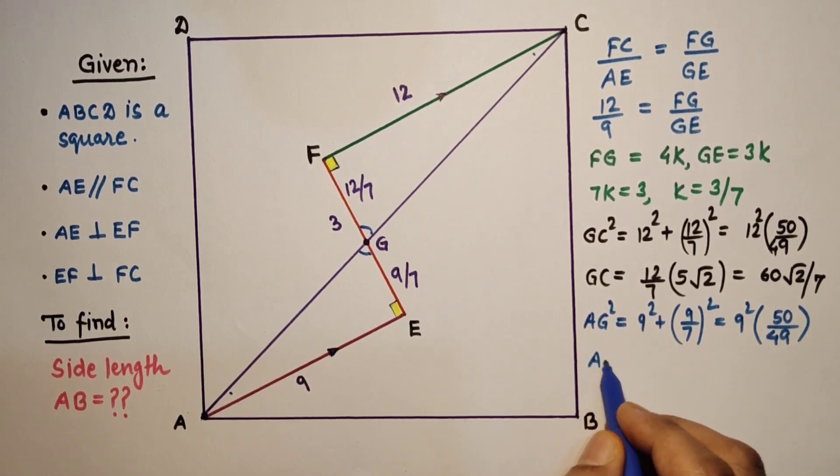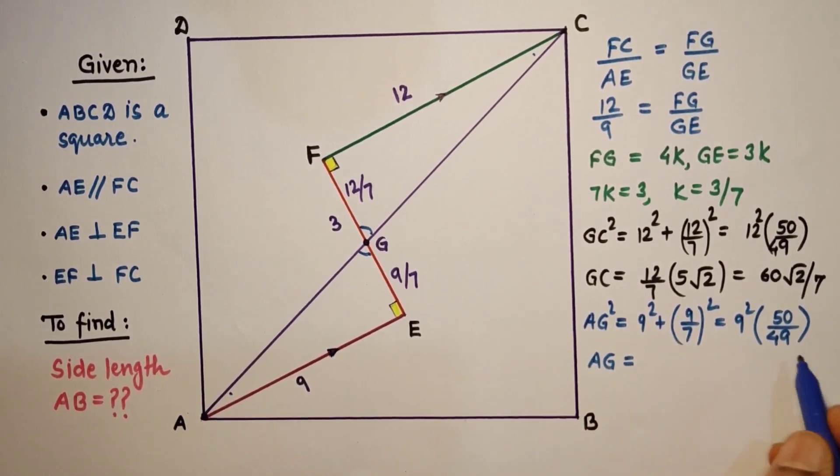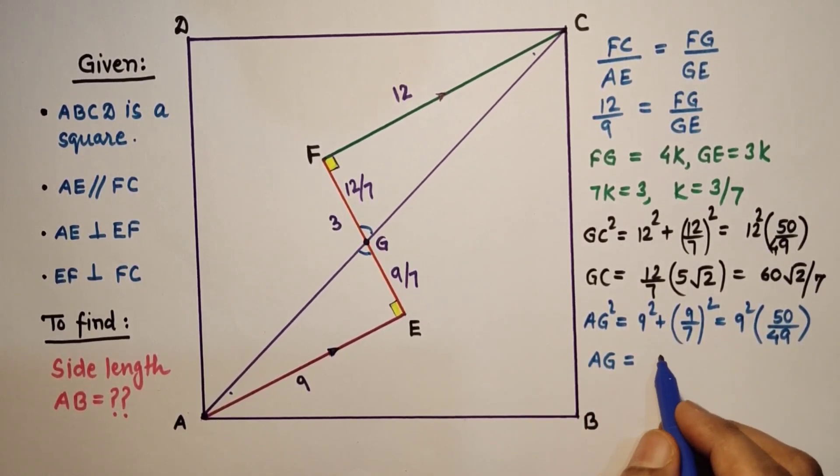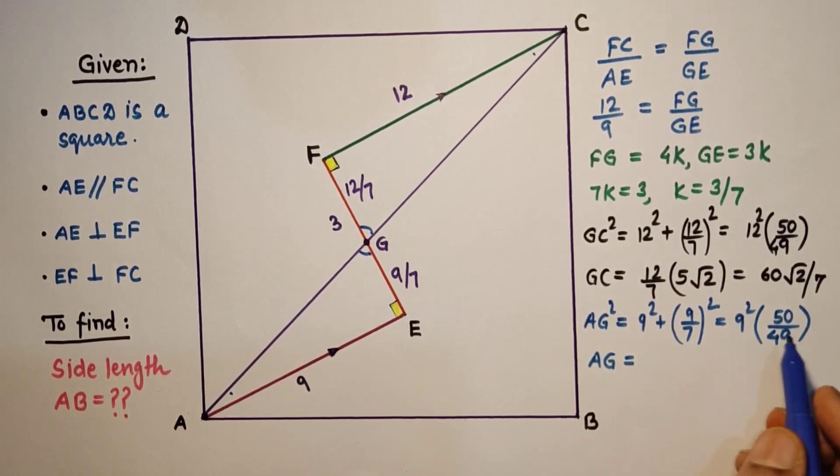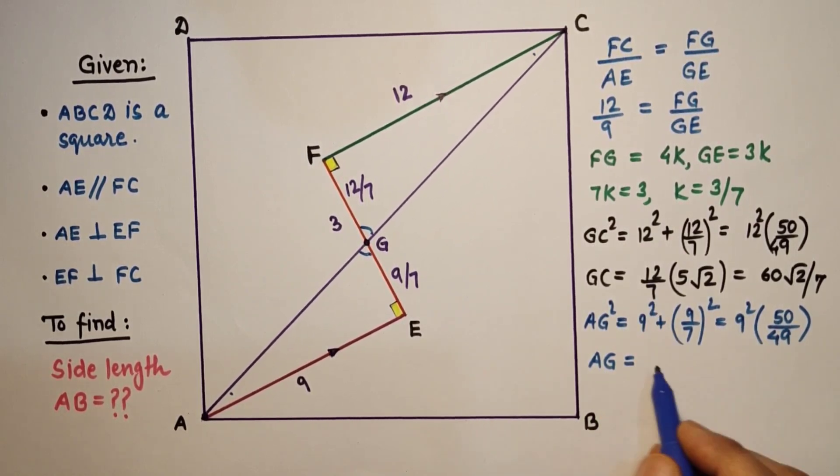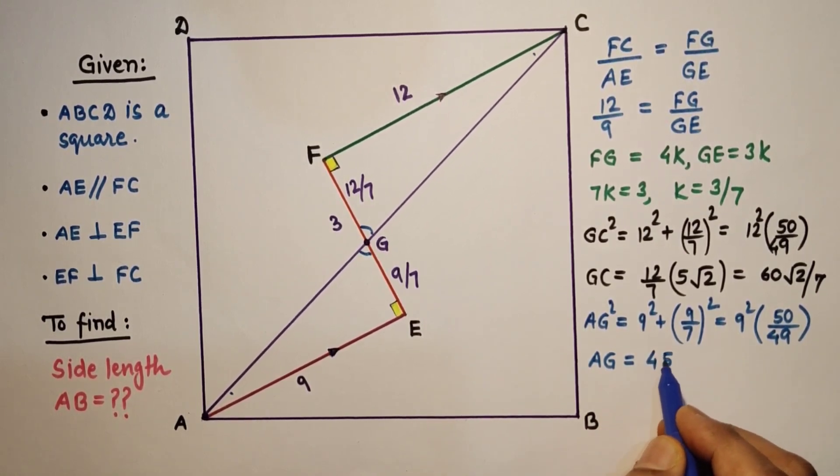And therefore AG in this case will be 9 by 7, 5 root 2. 9 by 7 into 5 root 2, 9 into 5 is 45 root 2 by 7.